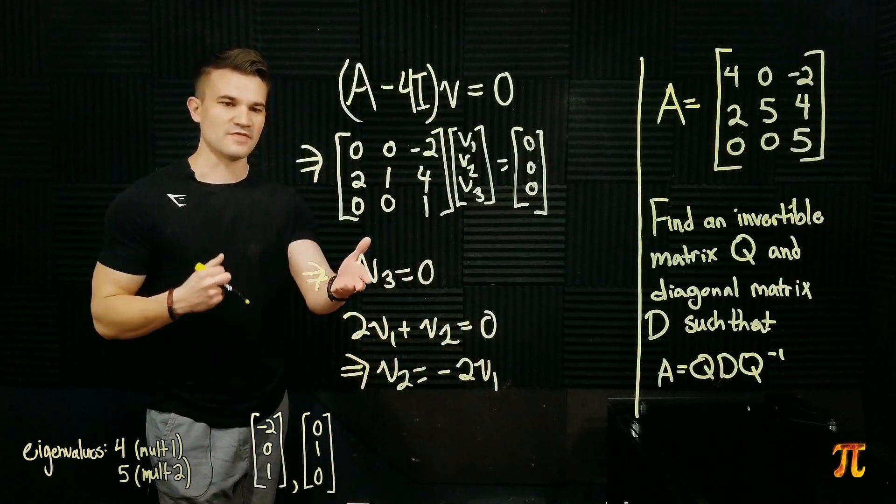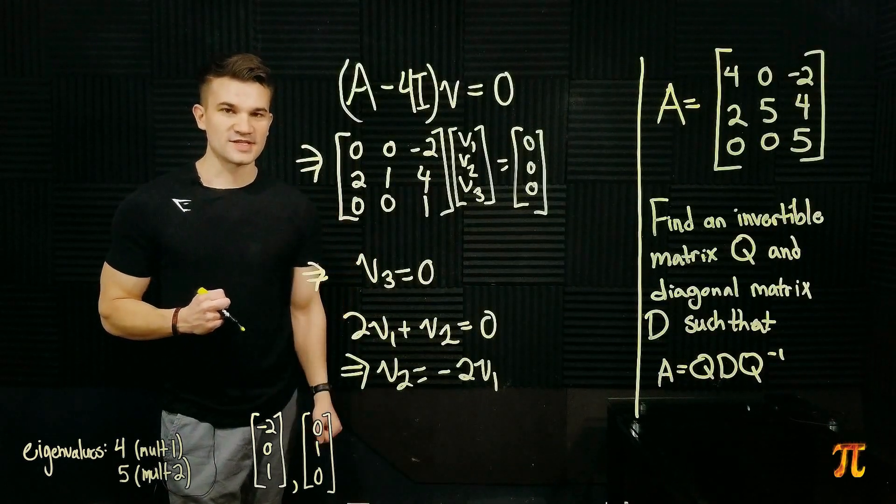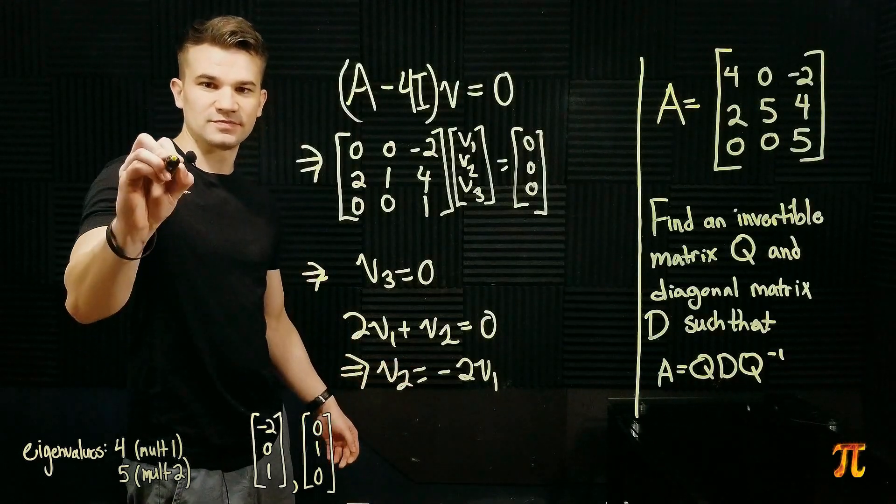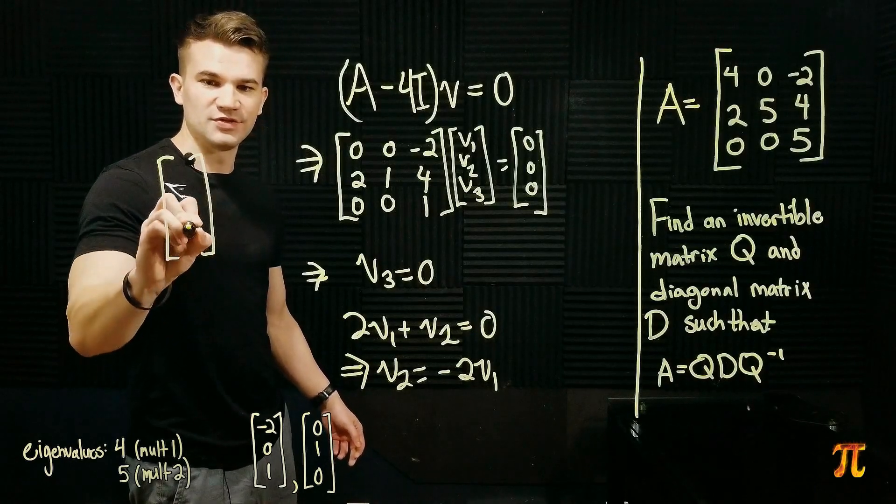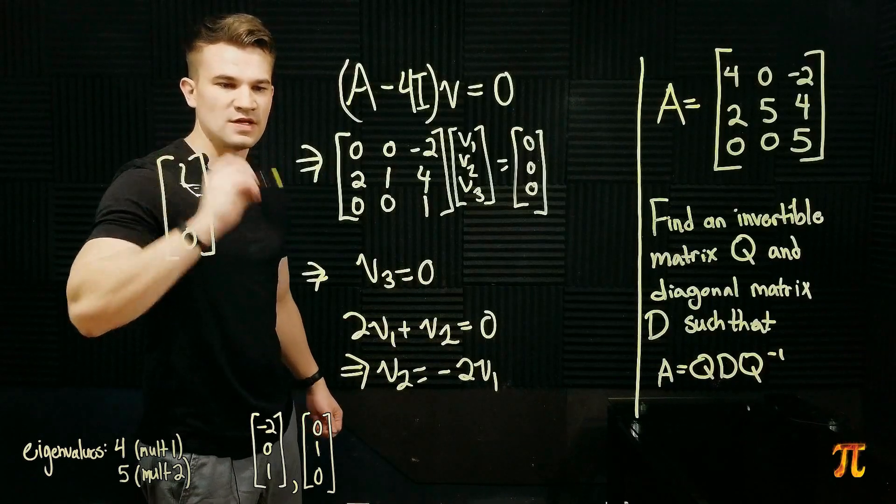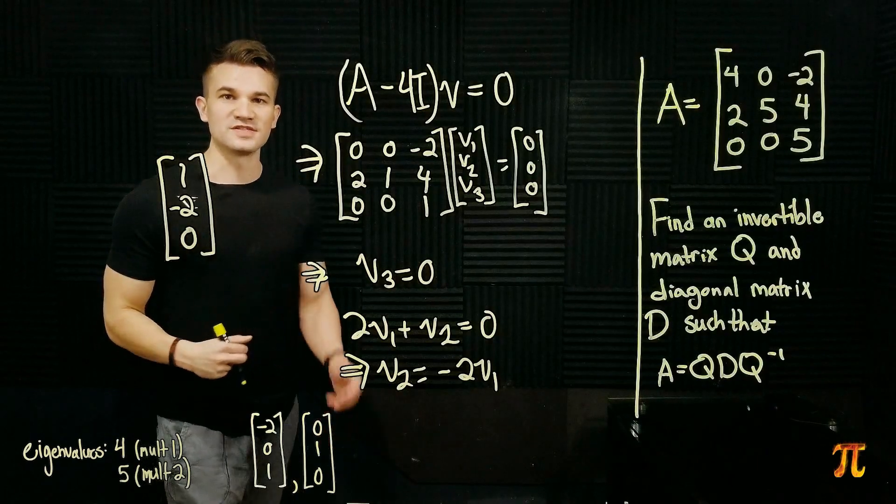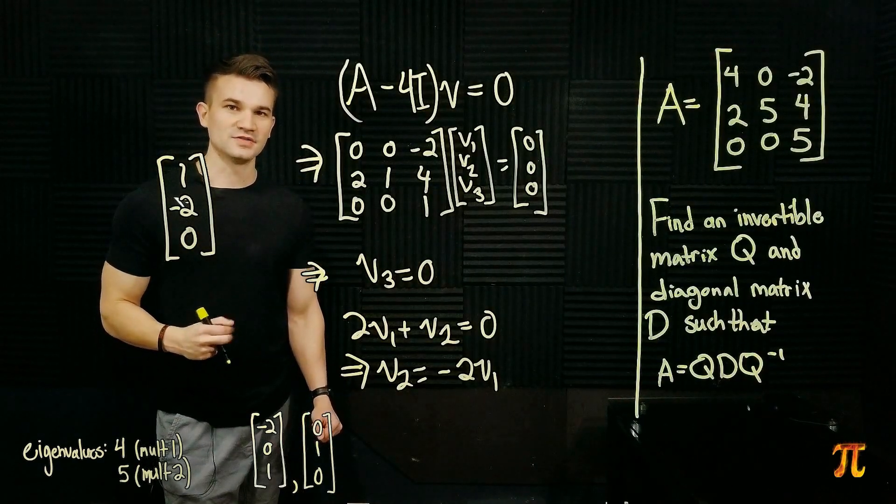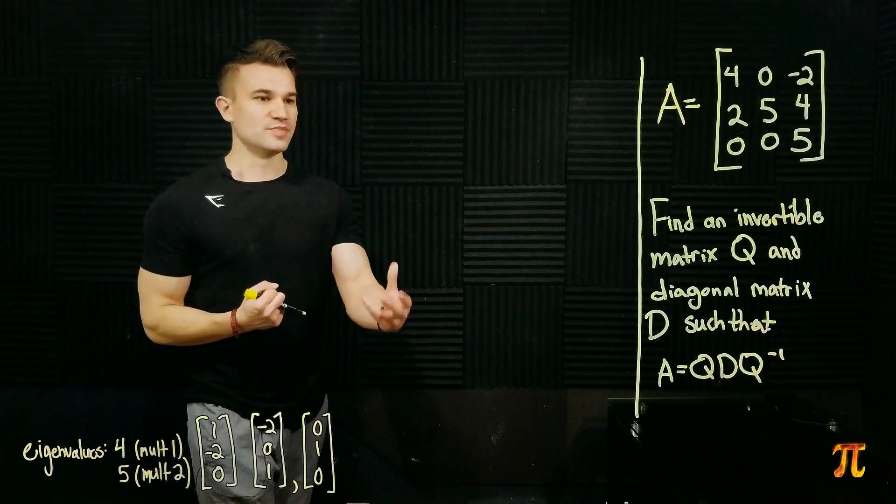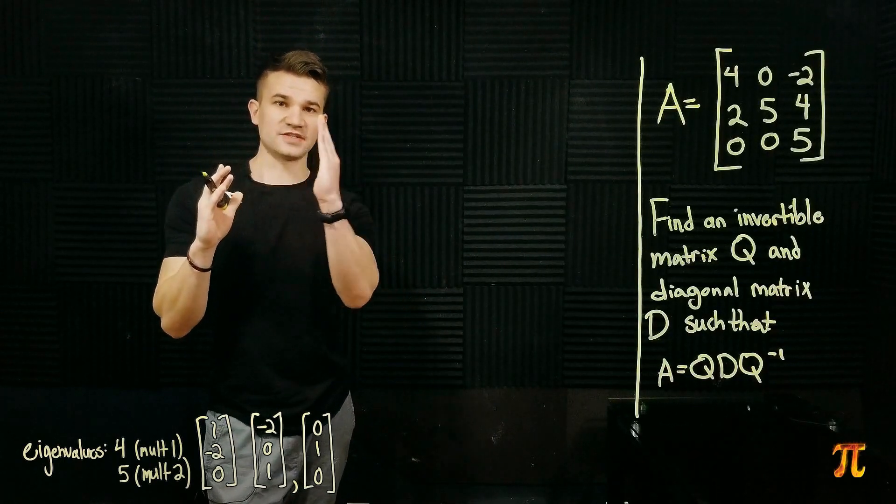So, we have these restrictions on the eigenvectors corresponding to 4. The third entry has to be 0 and V2 has to be negative 2 V1. So, let's pick an eigenvector. V3 is 0. We will pick V1 to be 1, and that makes V2 negative 2. So, here is the eigenvector corresponding to 4. We now have a full basis of eigenvectors. And from that, we can build the matrix Q. The matrix Q is just going to be the matrix with our basis vectors as columns.